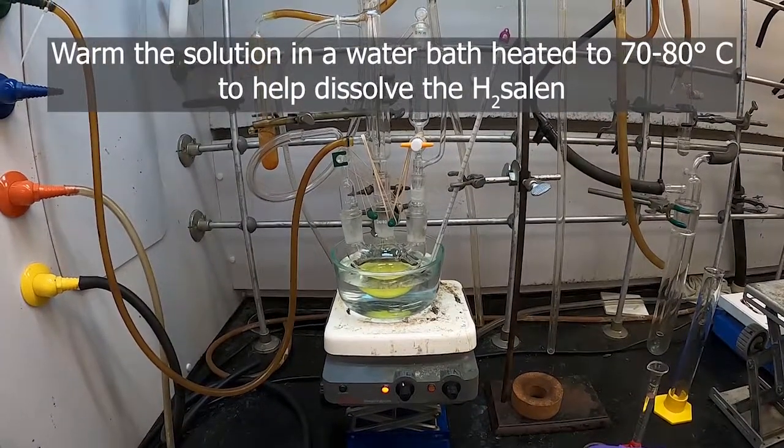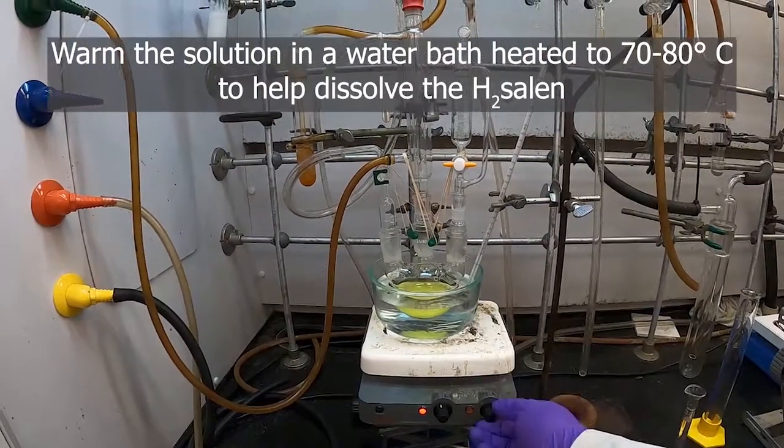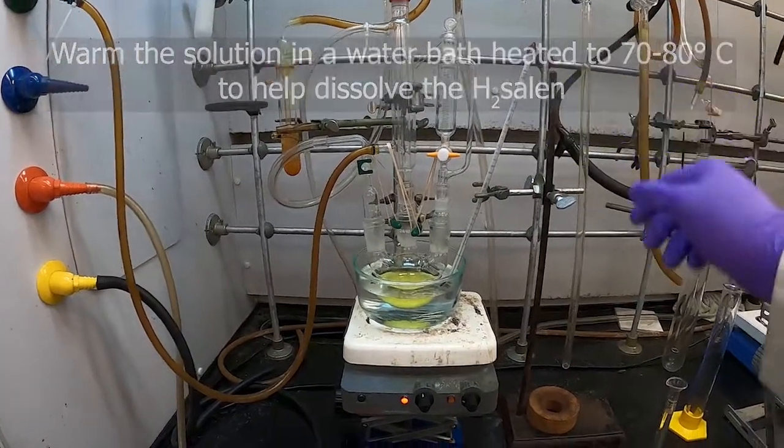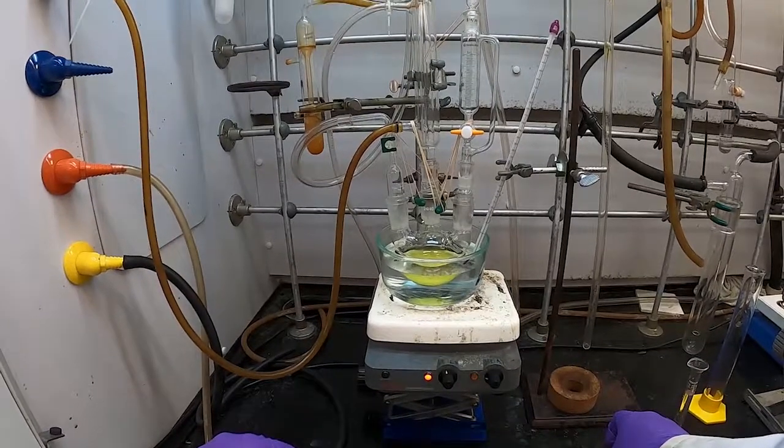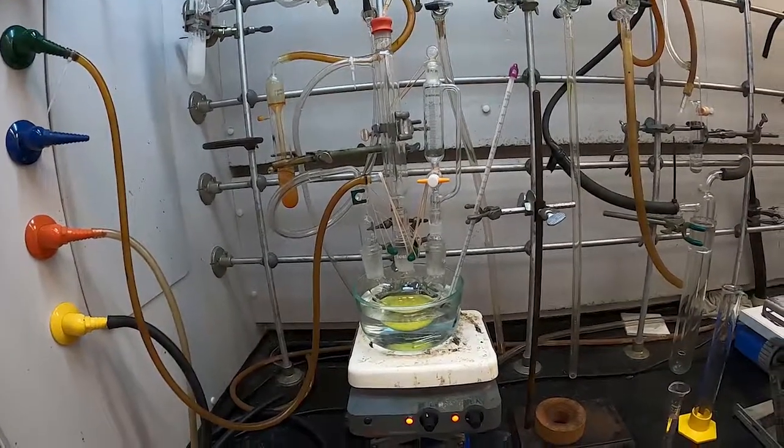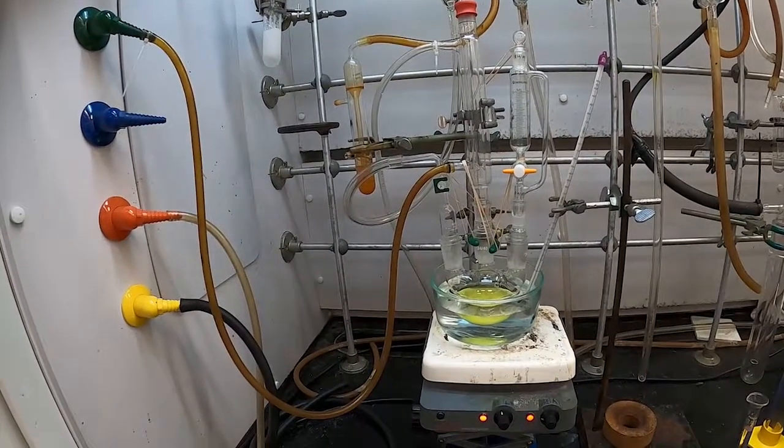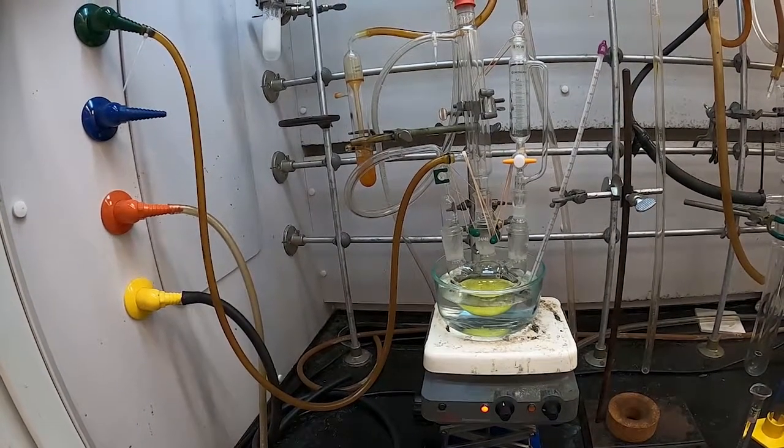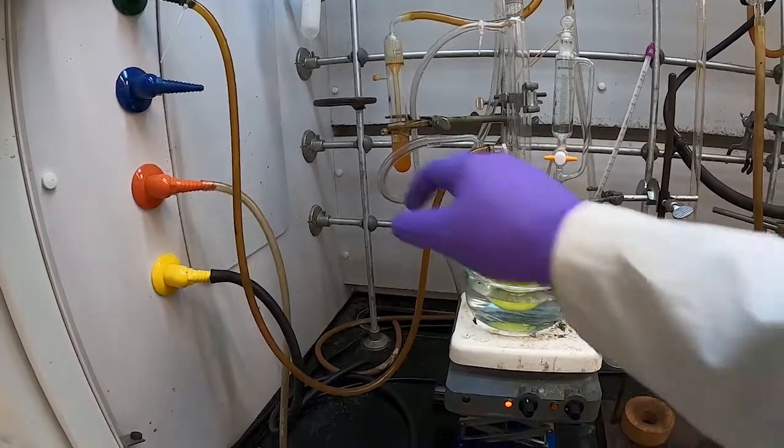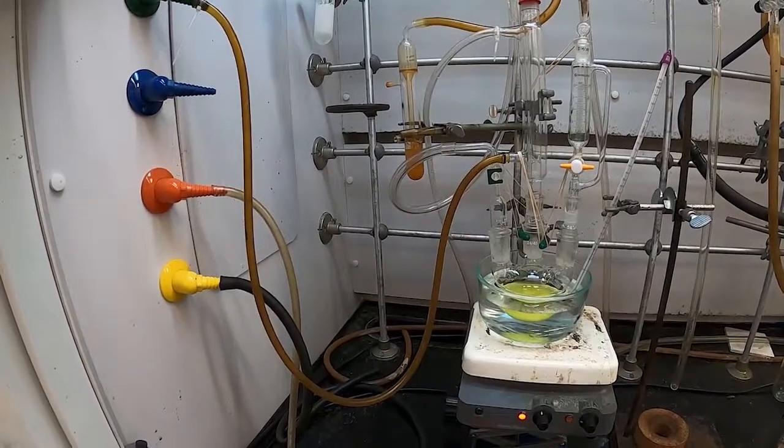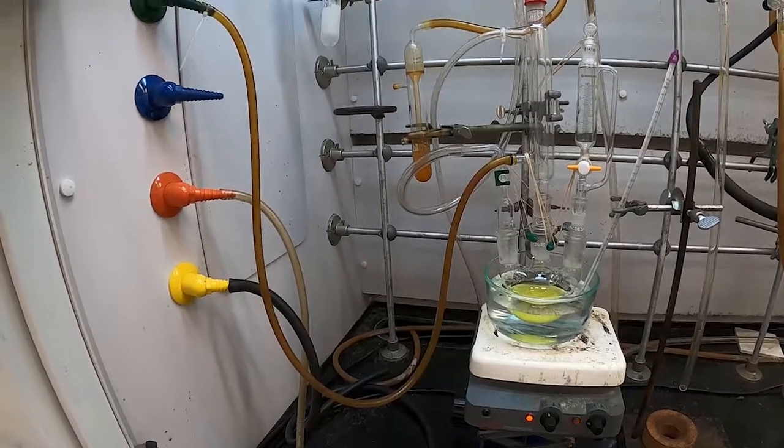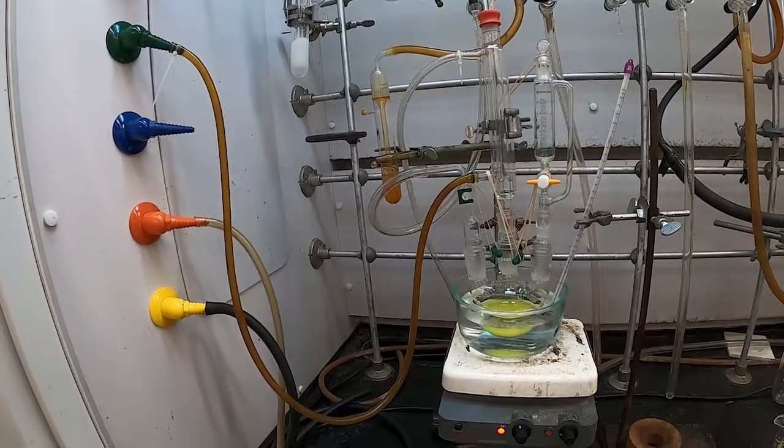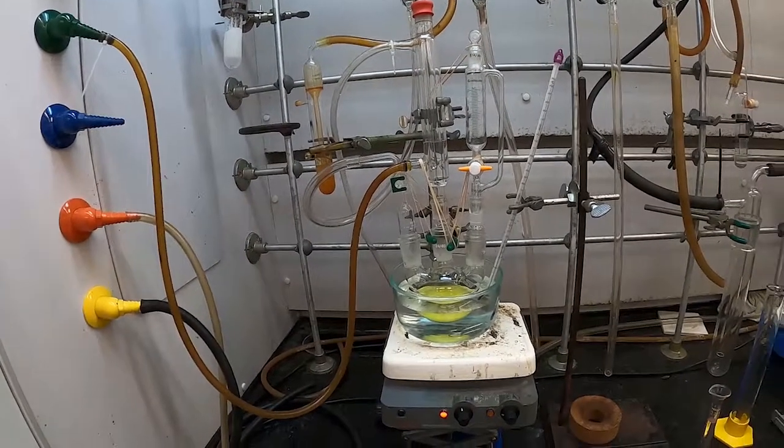In order to get the saline to dissolve in the ethanol, we need to heat our solution here, hence the water bath. So we'll heat this. We want it to be between 70 and 80 degrees. So while that's heating, we can slow our nitrogen flow considerably, maybe one bubble per second or so. And we can also fill our condenser with water from the water tap here.